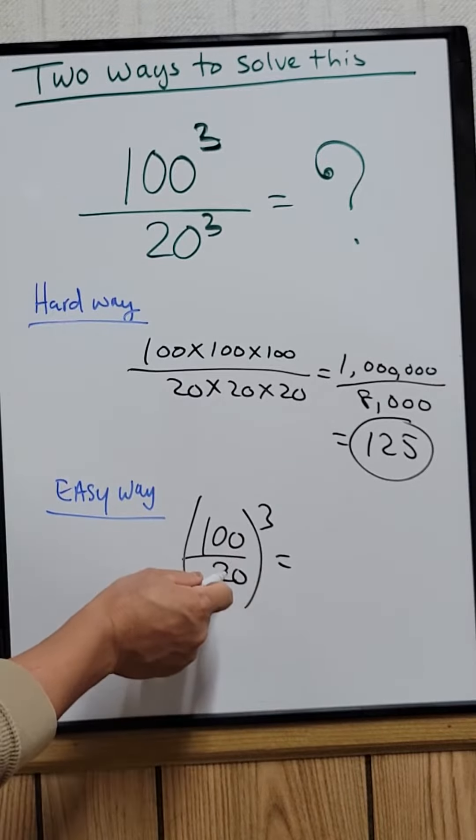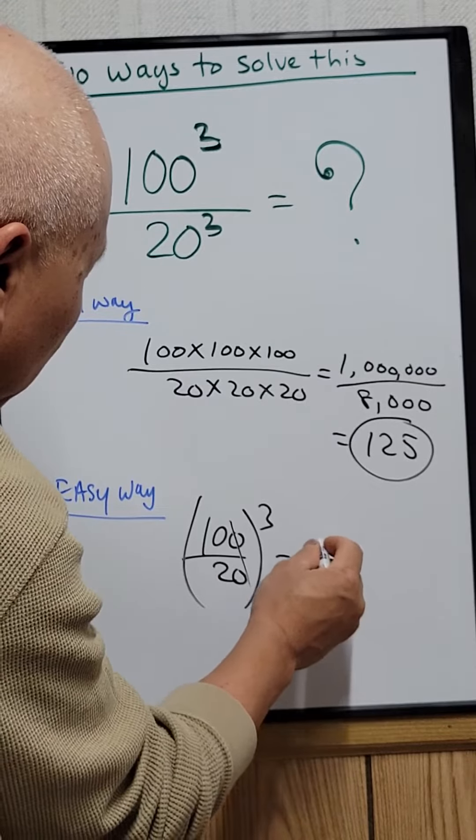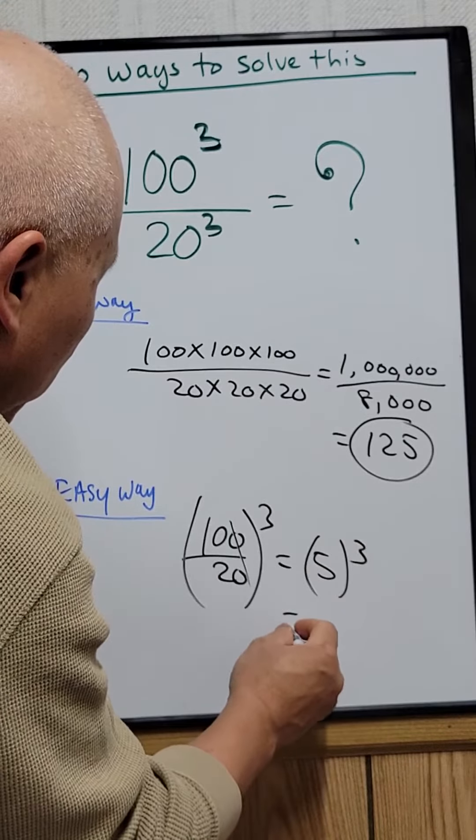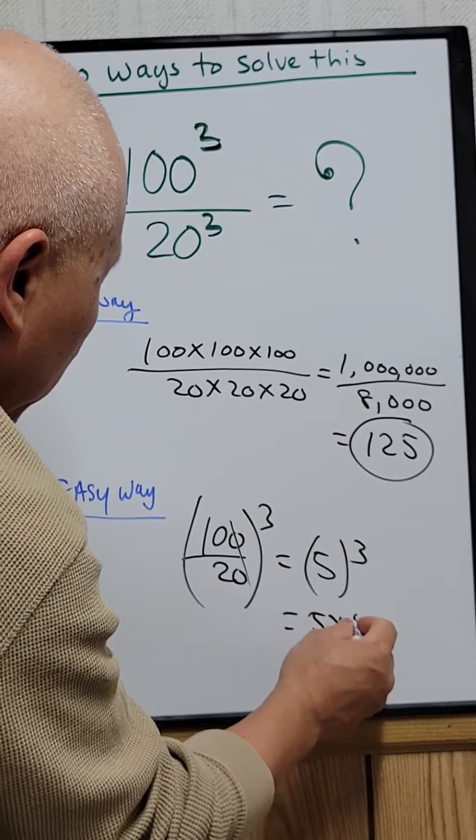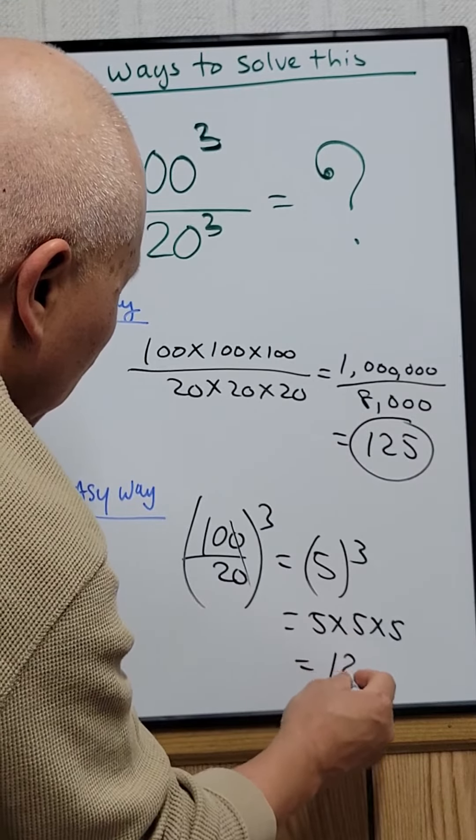And then 100 divided by 20 you can equal to 5. So 5 cubed. 5 cubed which just means 5 times 5 times 5, which equal to 125.